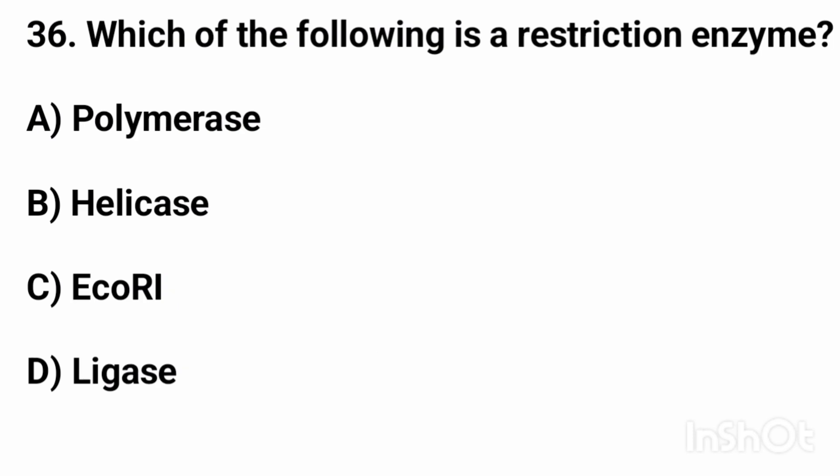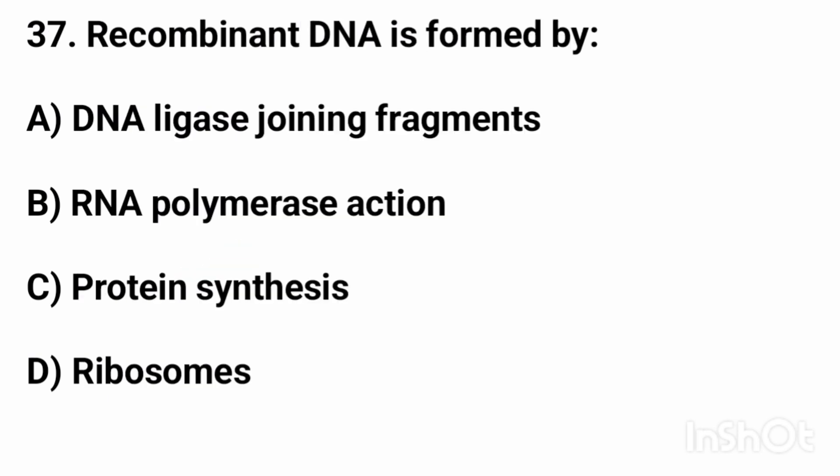Question thirty-six: which of the following is a restriction enzyme? The right answer is option C. Question thirty-seven: recombinant DNA is formed by? The right answer is option A, DNA ligase joining fragments.